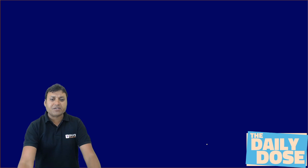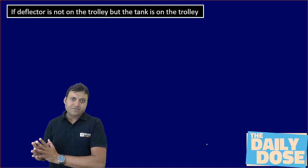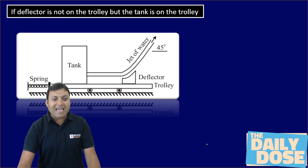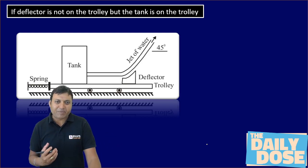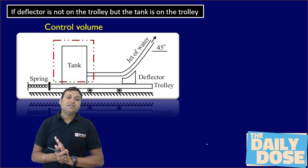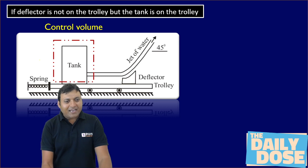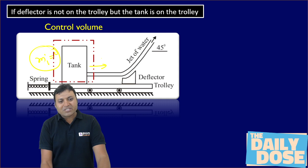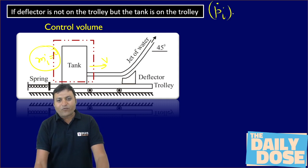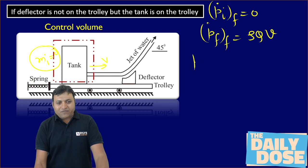Now, slightly modifying the question: if the deflector is not on the trolley and only the tank is on the trolley, what will be the force experienced by the spring? In that case, our control volume is just the tank — the fluid in the tank. There is no mass entering the control volume, so the initial momentum in the x-direction is zero, and the final momentum of the fluid per second in the x-direction is simply rho × Q × V.